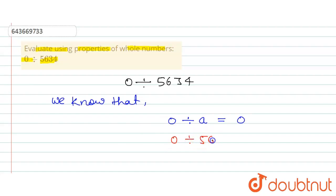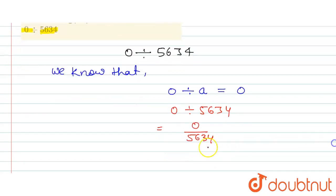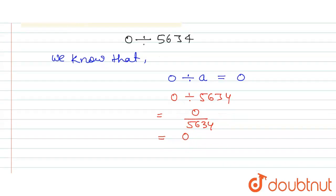Or this can be written as zero divided by 5634. Okay, now the resultant number, the any number which is divided to zero, so here in the numerator is zero and the denominator is any number. So any number which is divided, the numerator zero, so here the resultant number also be zero. Okay, so this is the final answer for this question.